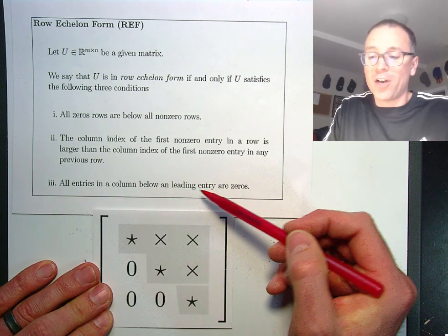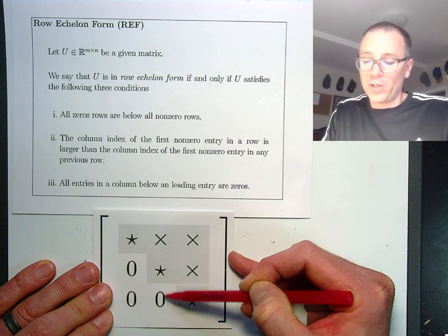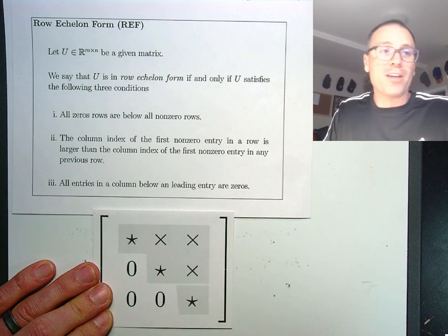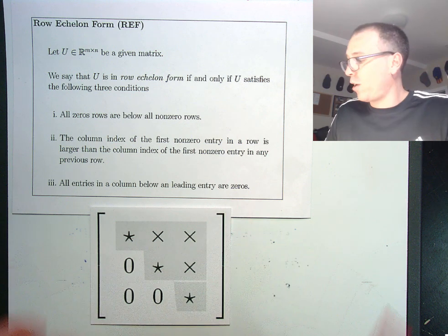Last thing is all entries under a leading entry are zero. So there's a leading entry, check that out, all zero. Leading entry, zero. Leading entry, nothing, we're satisfied. So this matrix is for sure in row echelon form.